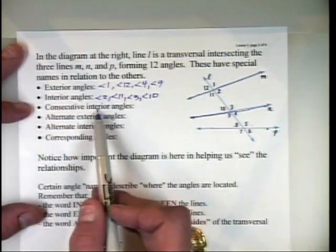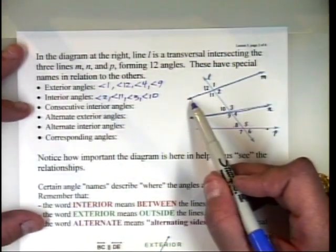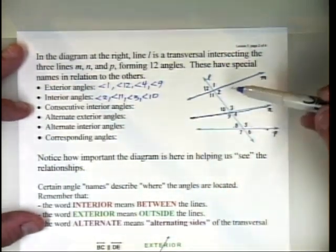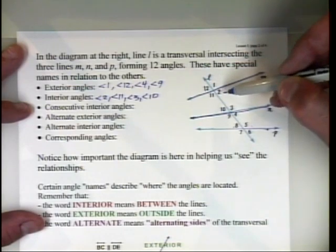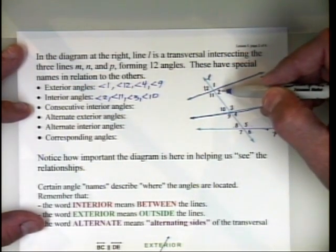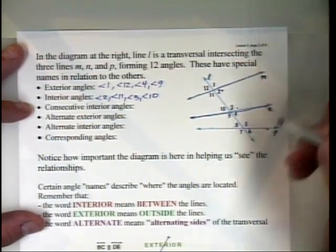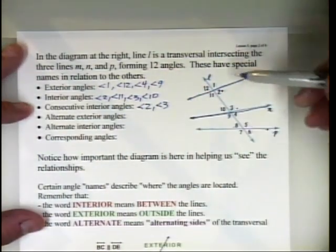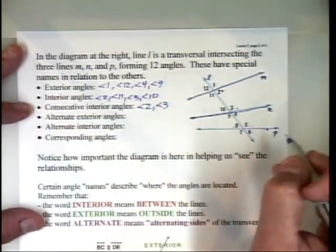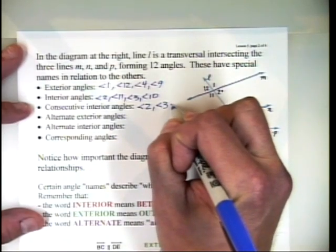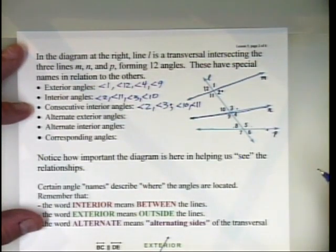Consecutive interior angles are angles that are in a row on the same side of the transversal, between the two lines. Going back to lines M and N, the interior angles are 2, 11, 3, and 10. Angle 2 and angle 3 are consecutive on one side, and angle 11 and angle 10 are consecutive on the other side — so angle 10 and angle 11 form a consecutive interior angle pair.